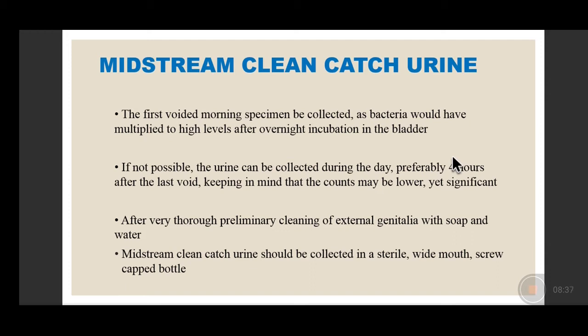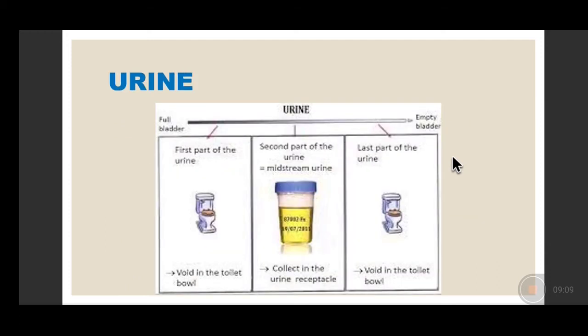For a female patient, she is asked to separate the labia with two fingers, pass off the first part of urine, and collect the second part in the universal container. After collecting sufficient urine, close the lid as soon as possible with minimal soiling of the outside of the container, then pass off the third part. The first and last parts are voided in the toilet bowl; only the midstream is collected.